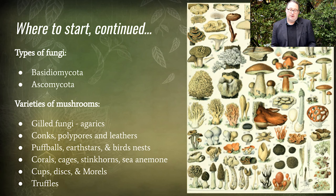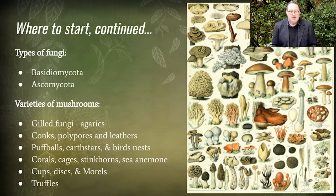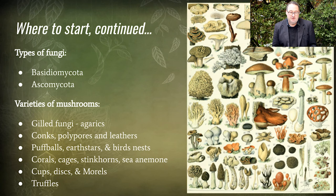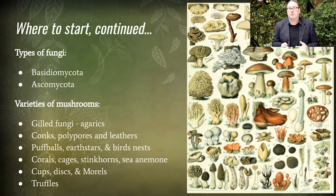There are the common agarics — your gilled fungi — then there are conchs such as Ganodermas, polypores and leathers, puffballs, earth stars, and bird's nest fungi. There are also corals, cages, stinkhorns, the sea anemone Aseroe rubra, cups, discs, morels, and truffles. It's really quite astounding the variety of different forms that fungi have evolved for their different environments and ecological niches.